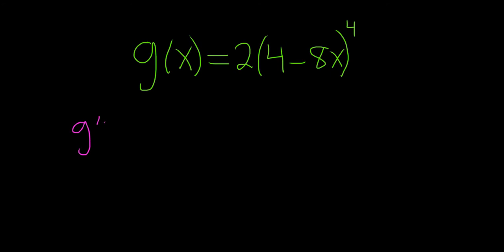So g prime of x. We have 2 times this stuff right here. You basically have something to a power. In this case that something is 4 minus 8x. This is your inside function.